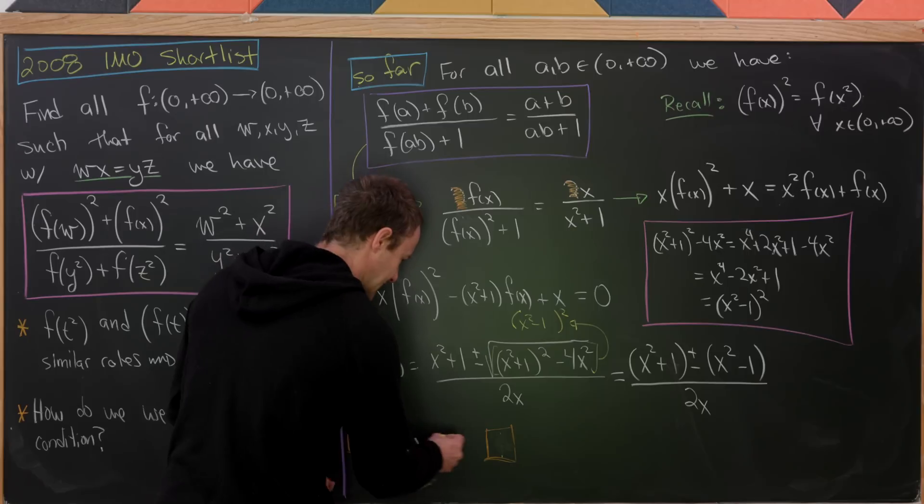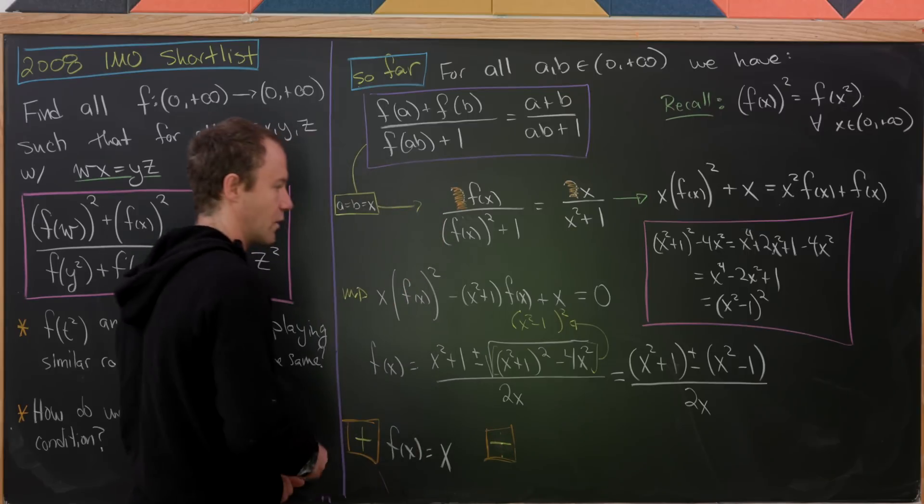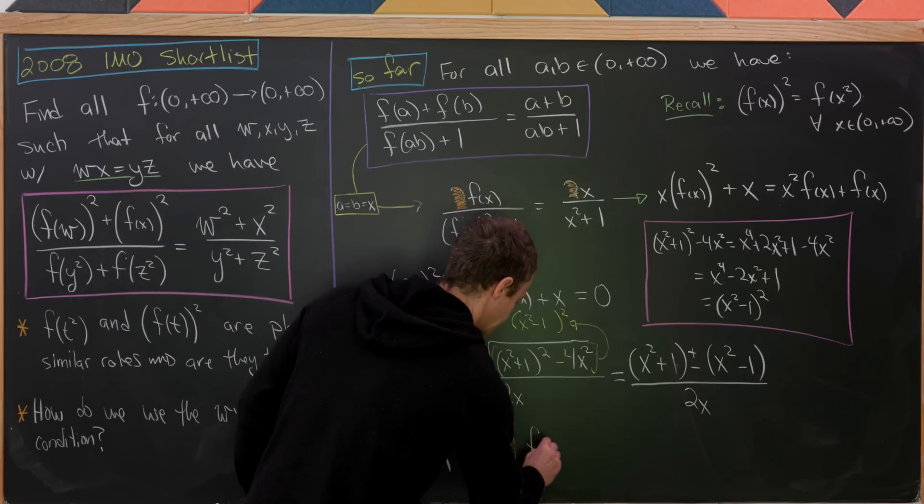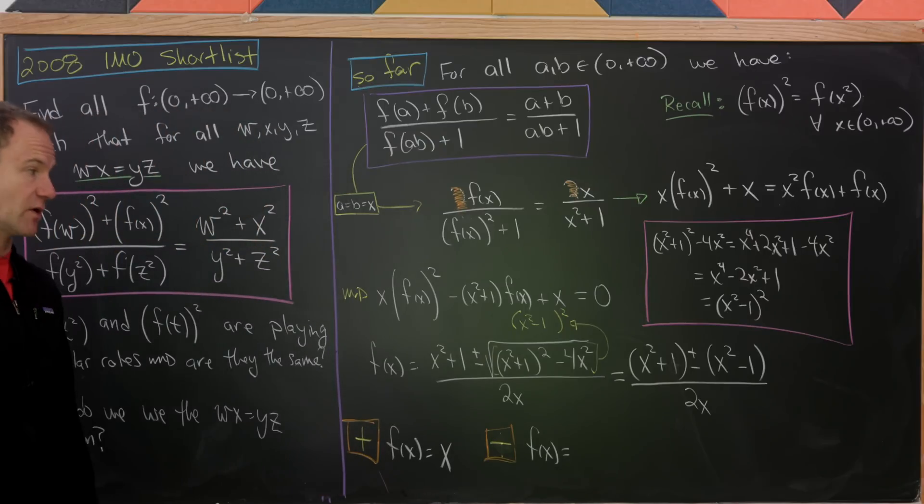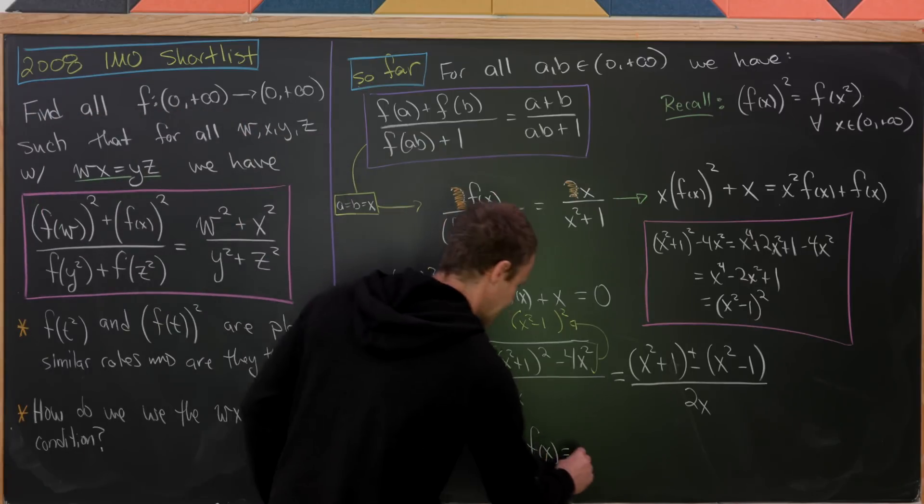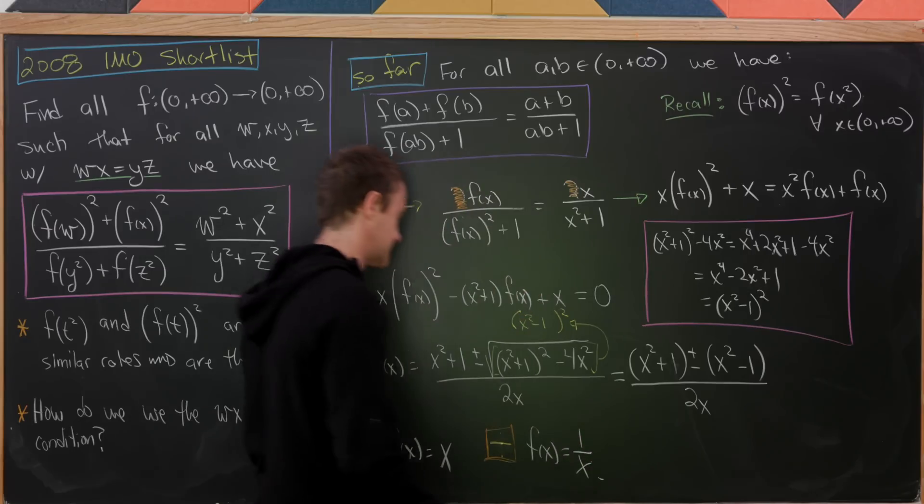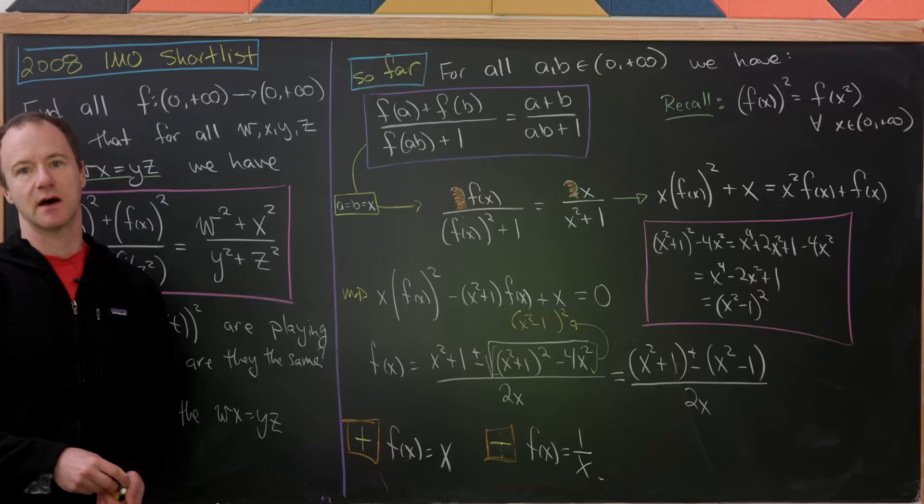So now what happens if we take the minus part in the quadratic formula? In that case, we'll have f(x) equals, well, now the x² parts will cancel and the constants will double up. We'll have 2 over 2x or 1 over x. So there we have it. And that's a good place to stop.